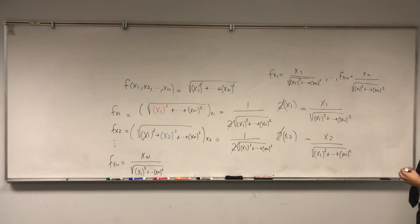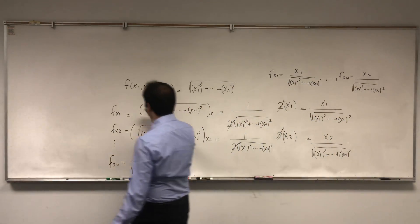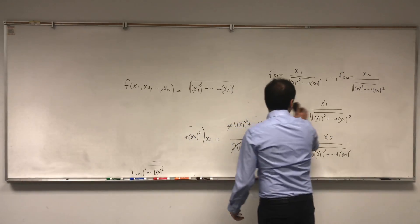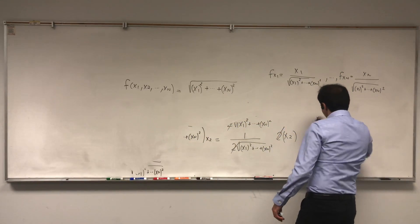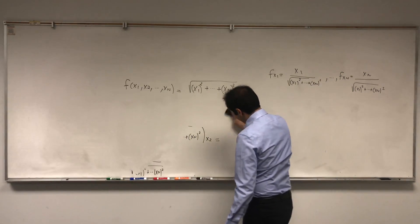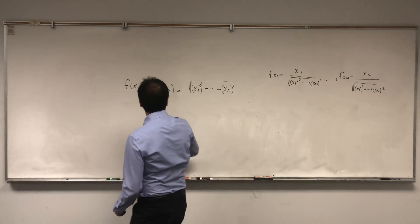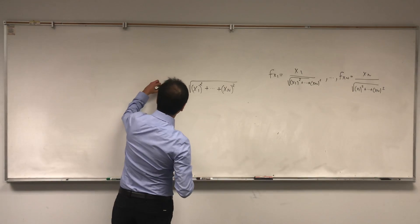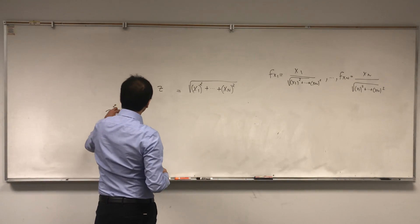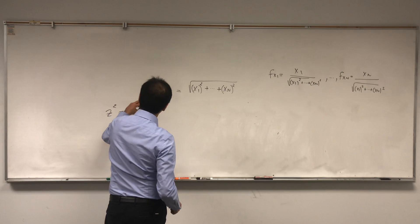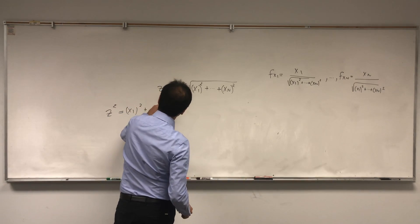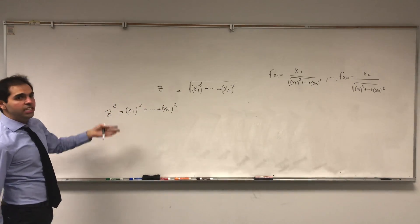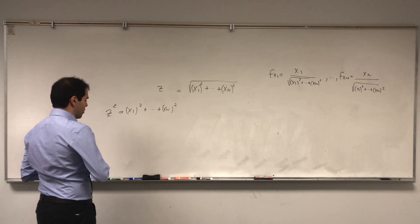So that thing is okay, and by the way, let me just show you another very nice trick for this, because if you don't like square roots, you're in luck, because you could avoid them if you want. So let's call this z, and notice z squared is x1 squared plus dot dot dot plus xn squared, and if you want to find zx1, just use the chain rule.